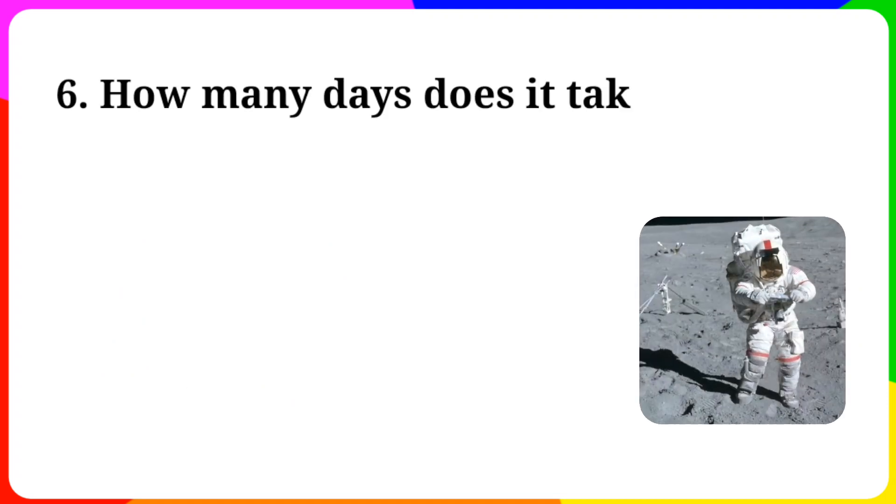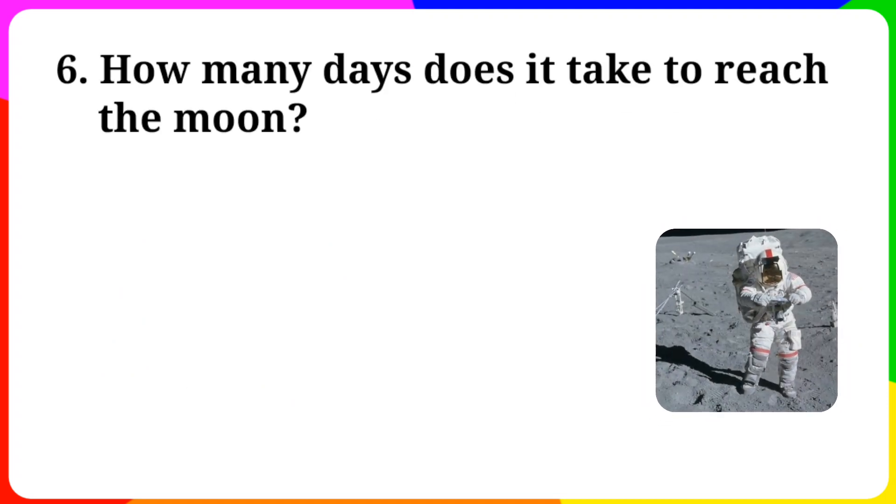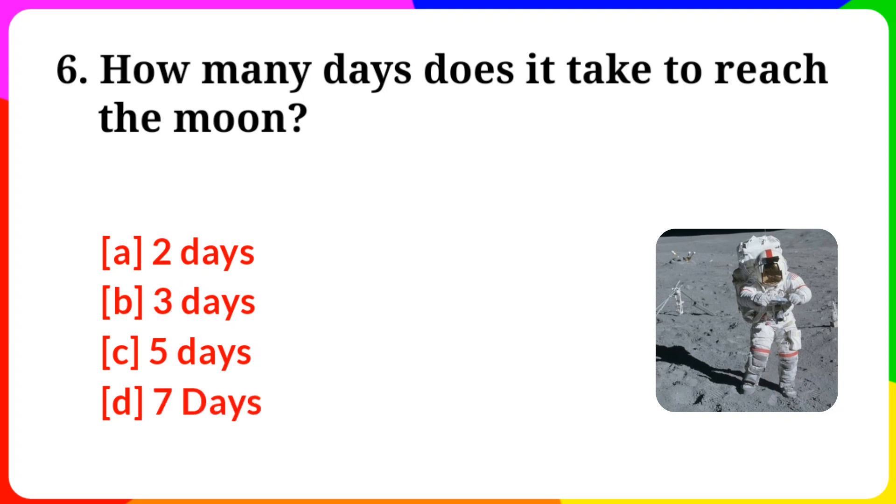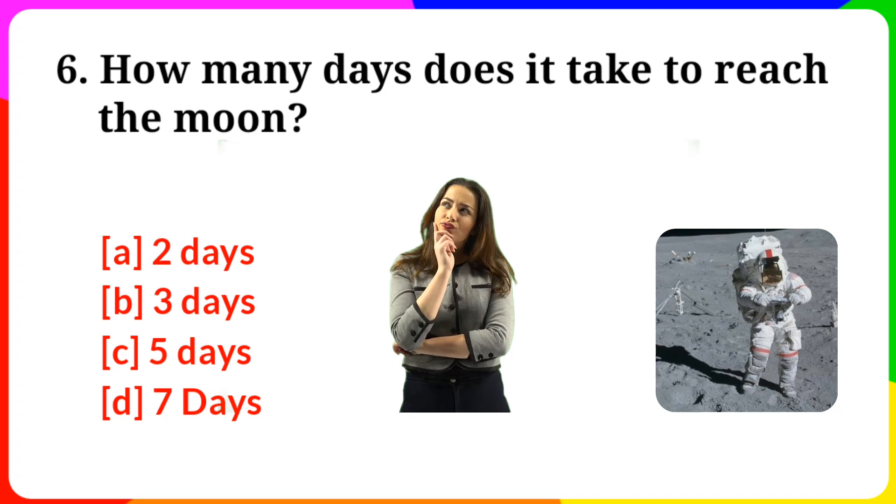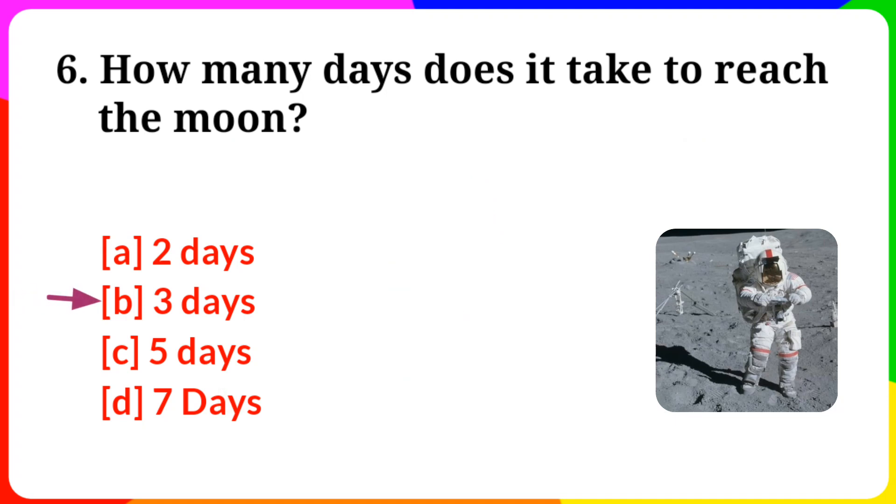Question number 6. How many days does it take to reach the moon? Option A: 2 days. B: 3 days. C: 5 days. D: 7 days. Answer is option B, 3 days.